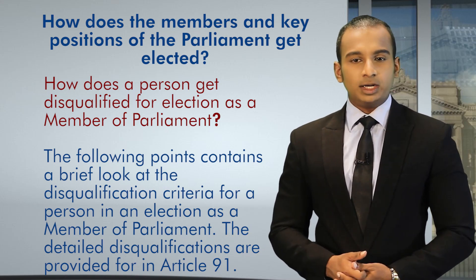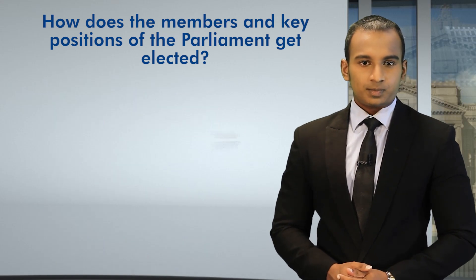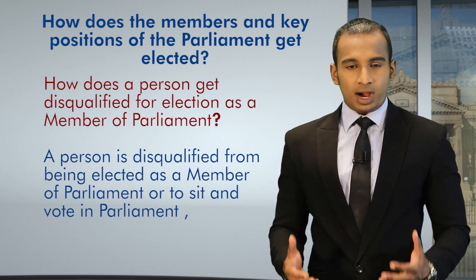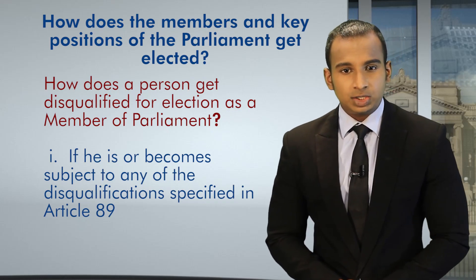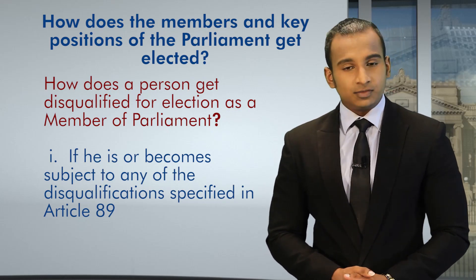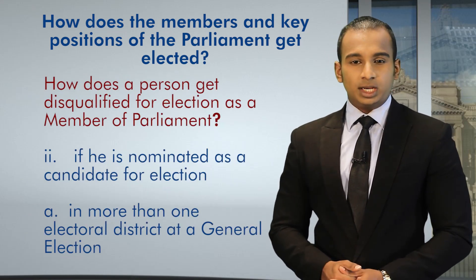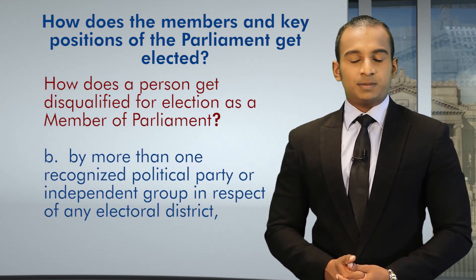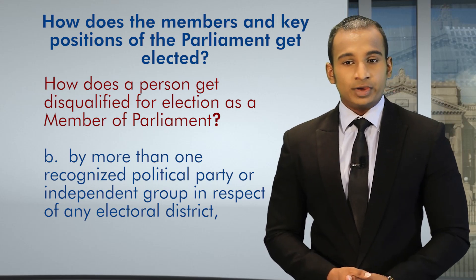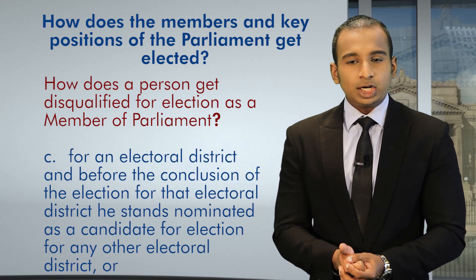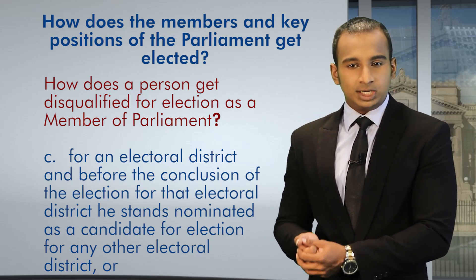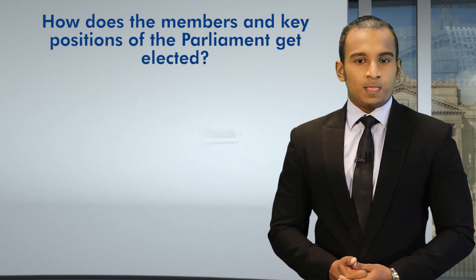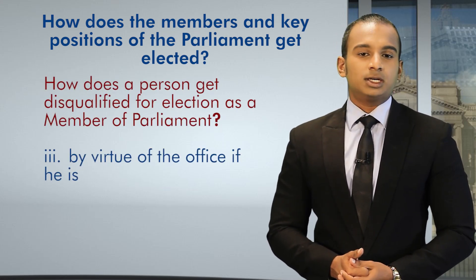How does a person get disqualified for election as a Member of Parliament? The following points contain a brief look at the disqualification criteria, with detailed disqualifications provided for in Article 91 of the Constitution. A person is disqualified from being elected as a Member of Parliament, or to sit and vote in Parliament: 1. if he is or becomes subject to any disqualification specified in Article 89 of the Constitution; 2. if he is nominated as a candidate for election in more than one electoral district at a general election, or by more than one recognised political party or independent group in respect of any electoral district, or he is nominated for an electoral district and before the conclusion of that election stands nominated as a candidate for another electoral district; or by virtue of the office he holds he may be disqualified.